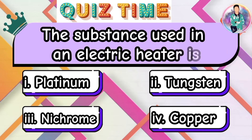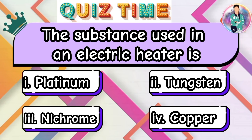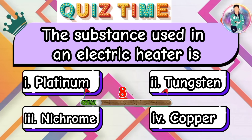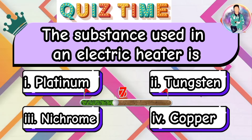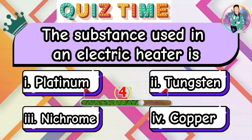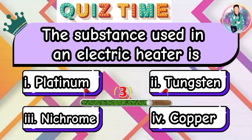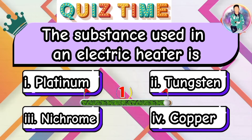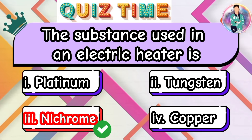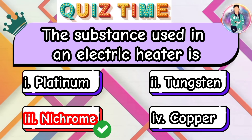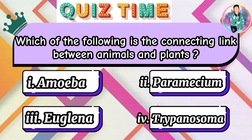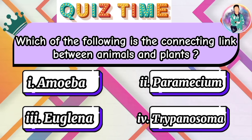The substance used in an electric heater is? Which of the following is the connecting link between animals and plants?